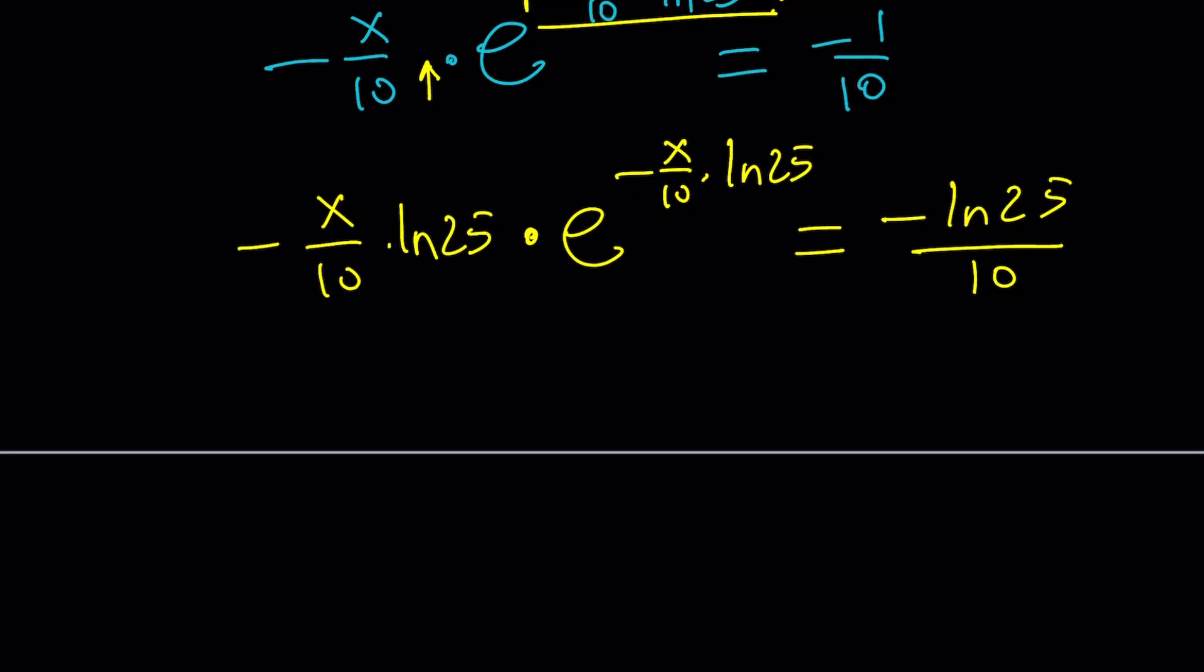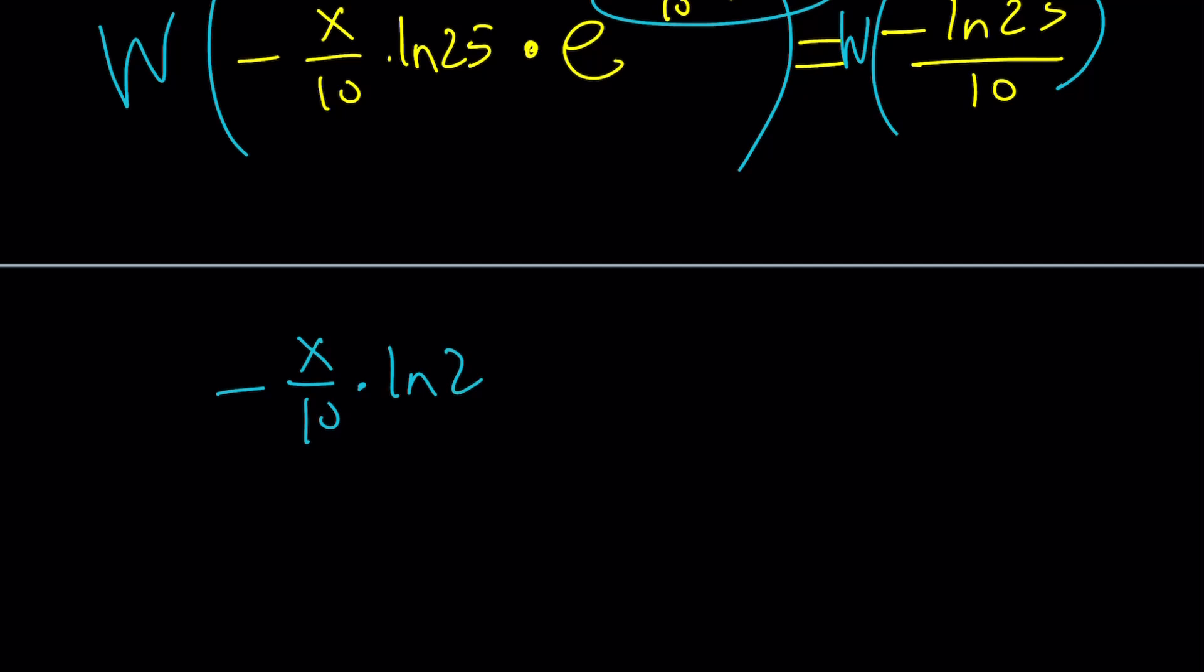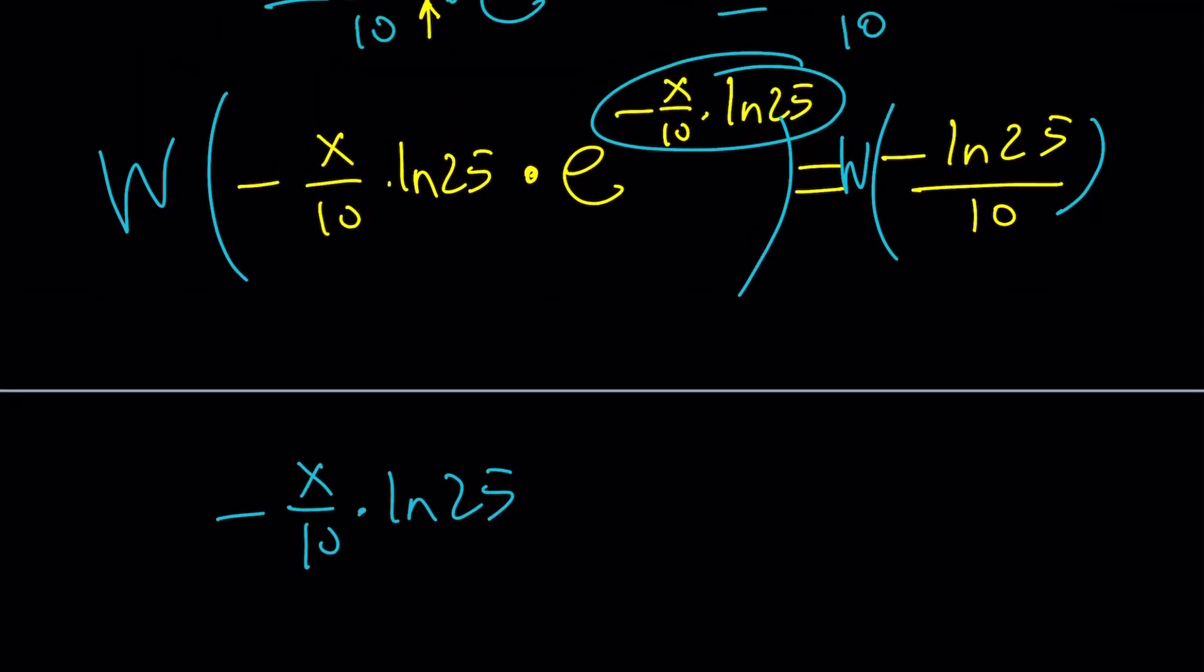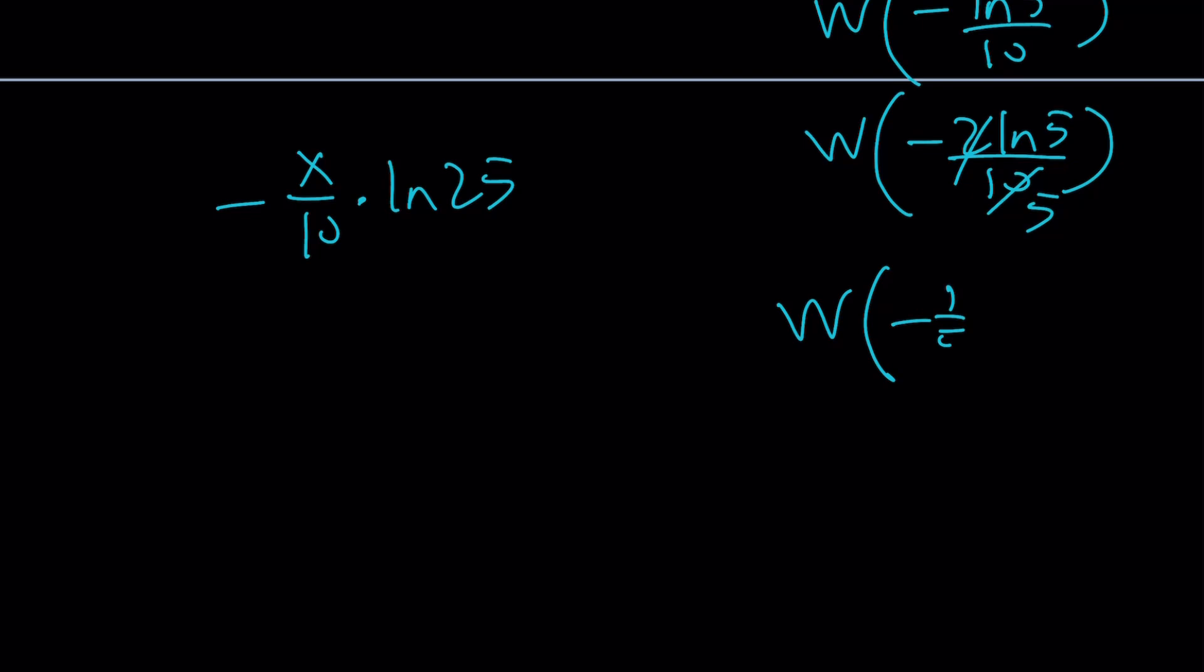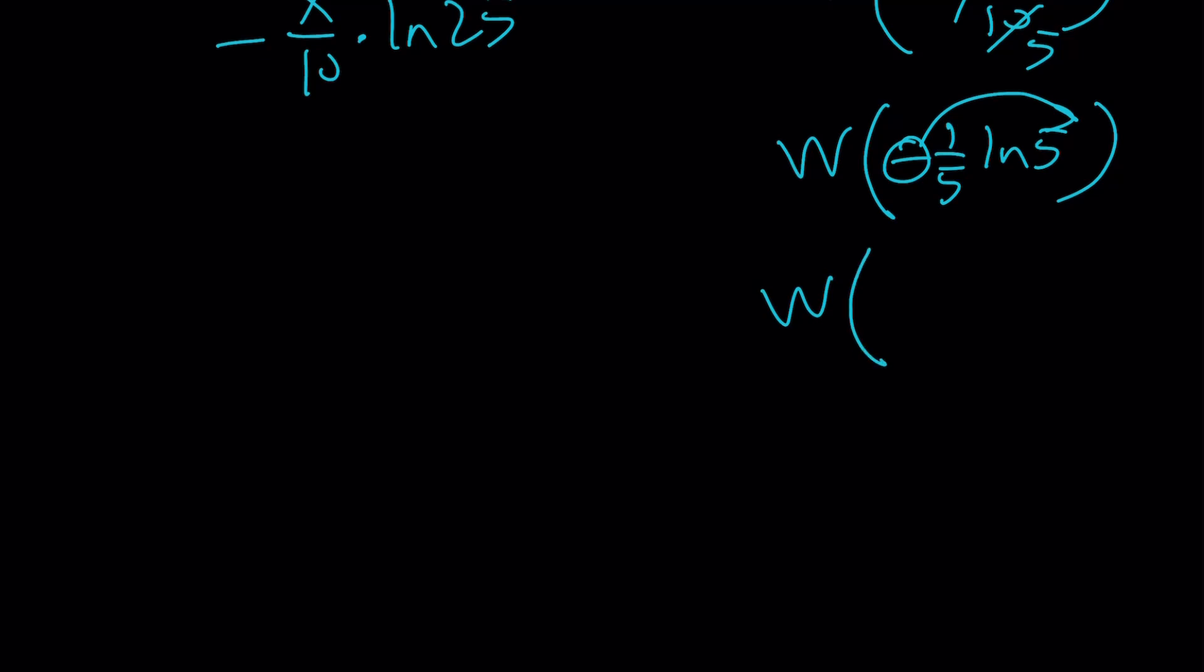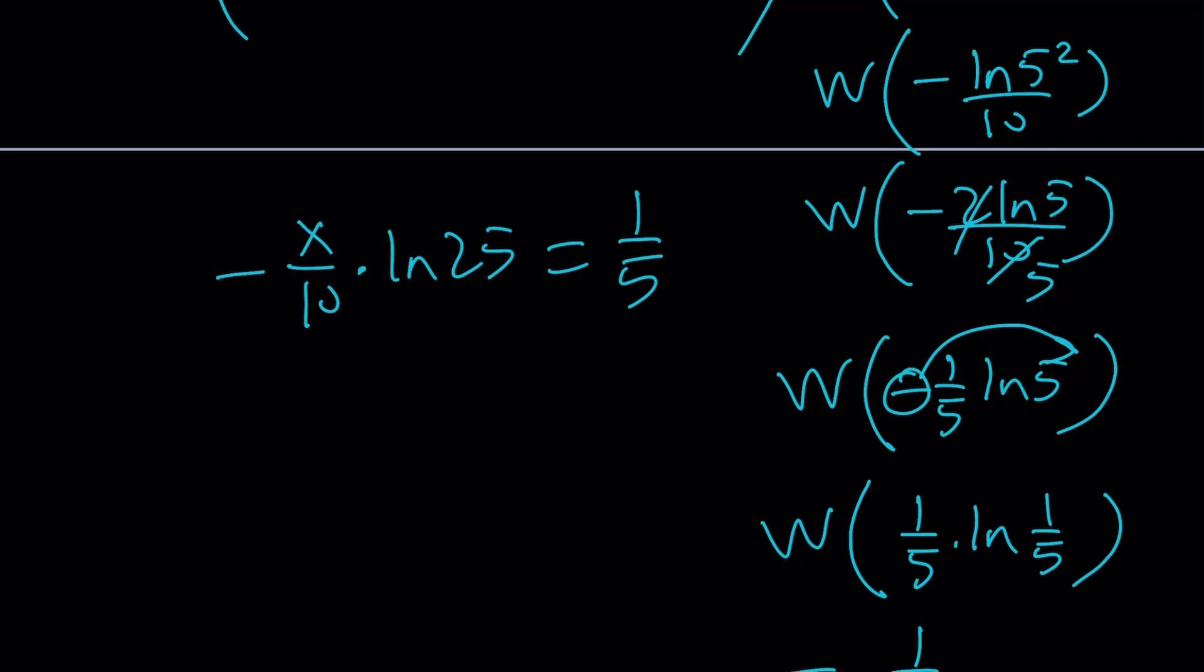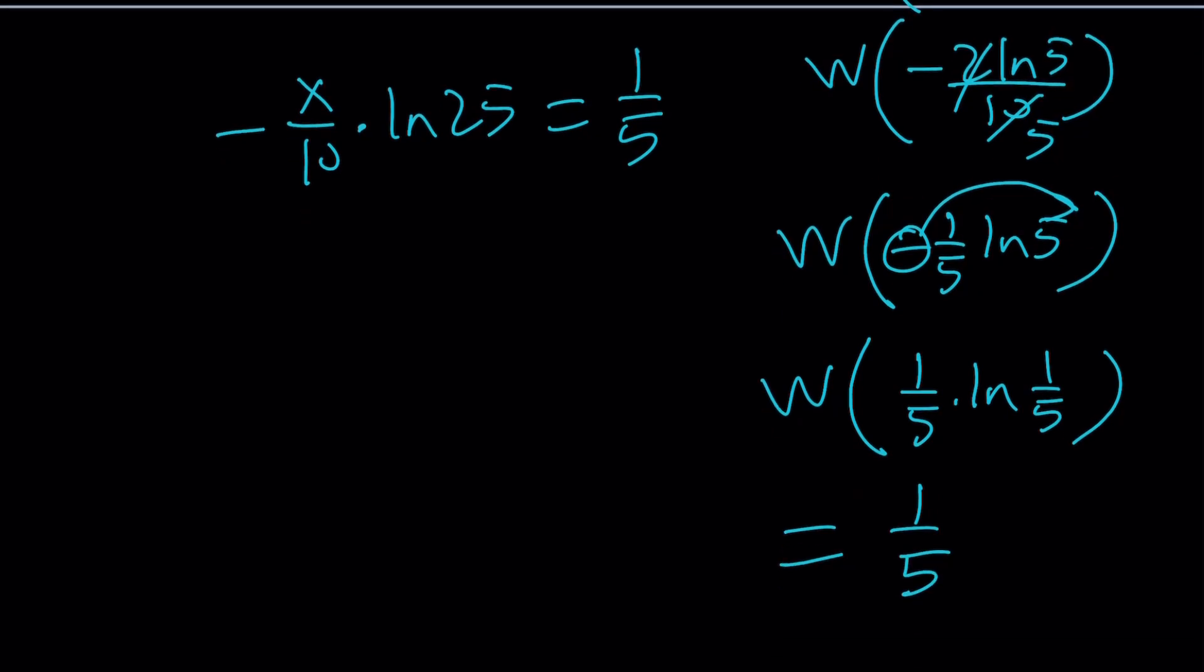So, when you apply Lambert's w function here and here, you're going to get the t as a solution. Negative x over 10 times ln 25 equals this. But, let's go ahead and simplify this. This is w of negative ln 5 squared over 10. And that is w of negative 2 ln 5 over 10. And now, 2 goes into 10 five times. This is going to become w negative 1 over 5 ln 5. And then, here's the trick. Put the negative 1 here. And you're going to get w of 1 over 5 times ln 5 to the power of negative 1, which is 1 over 5. And there we go. And this is going to become 1 over 5.